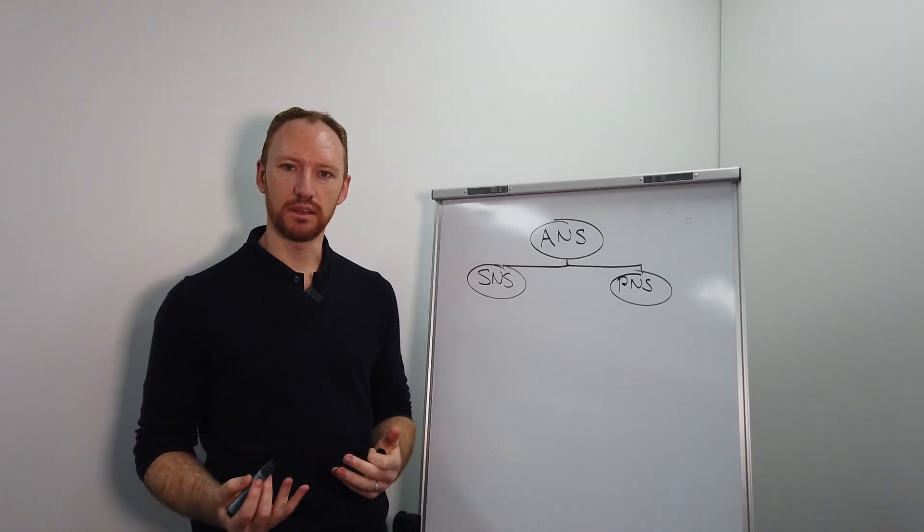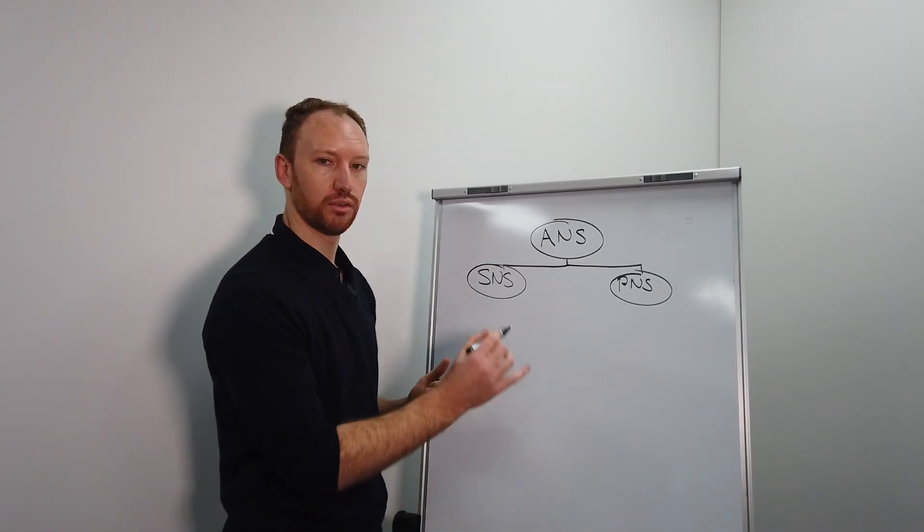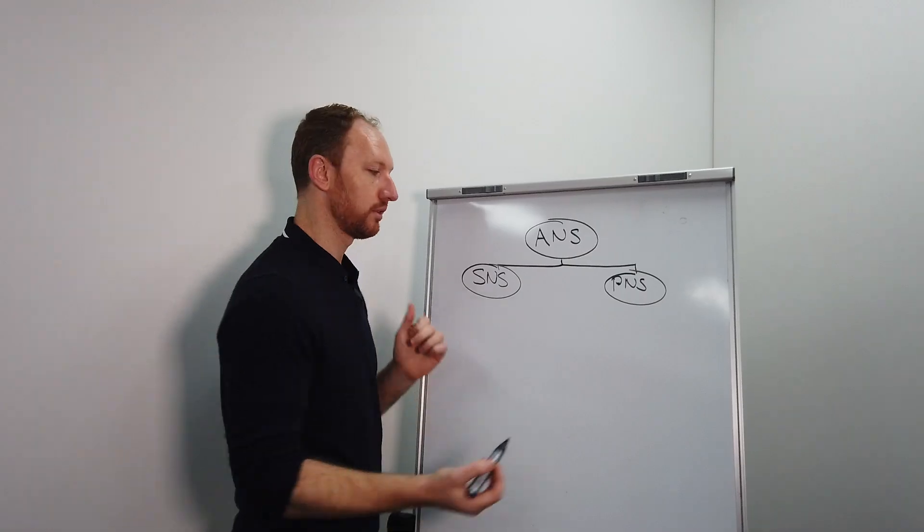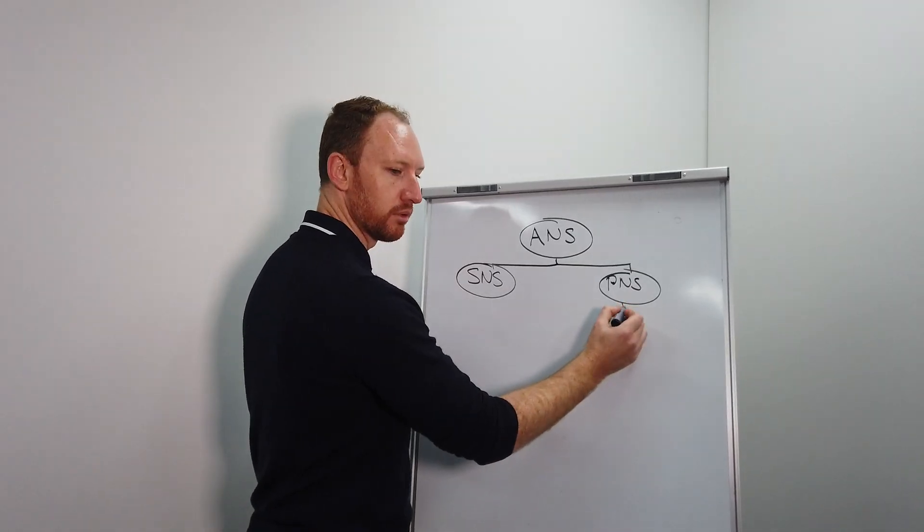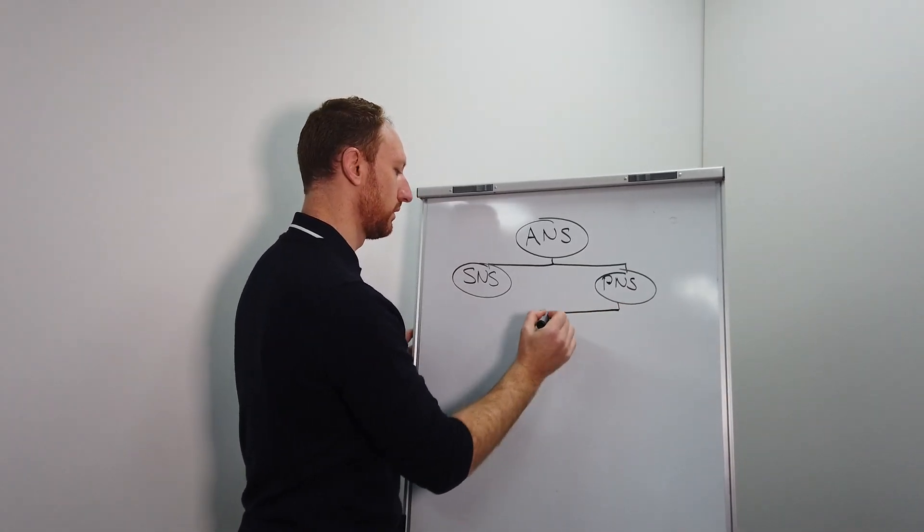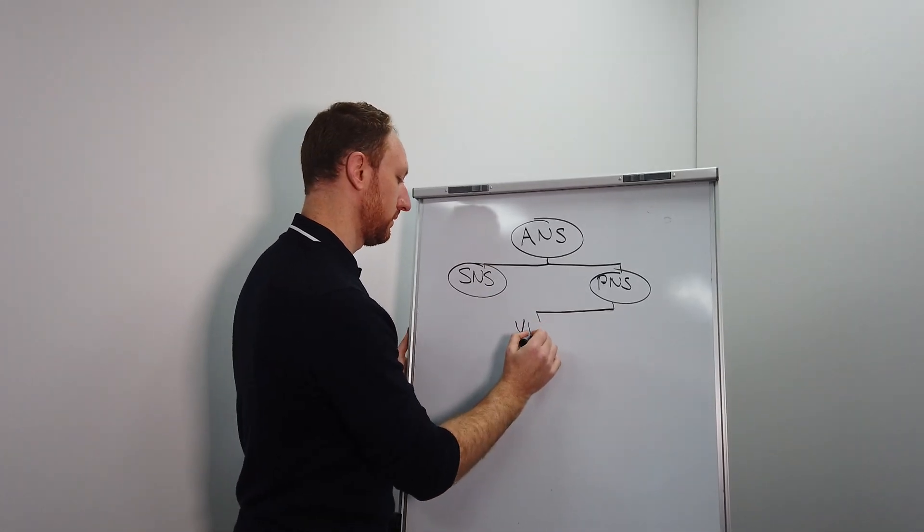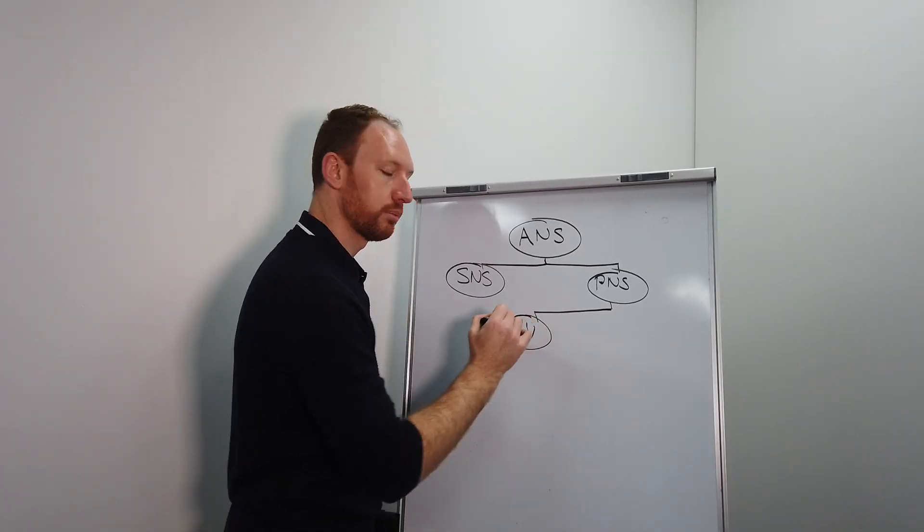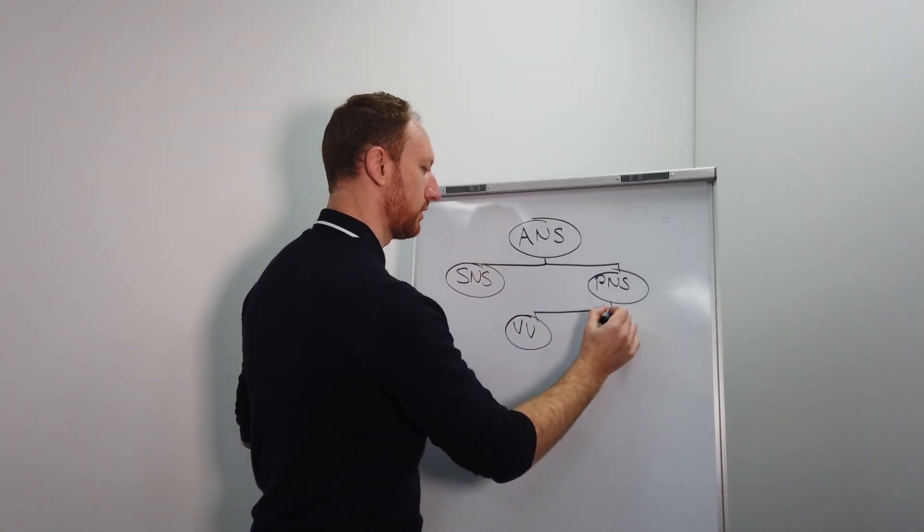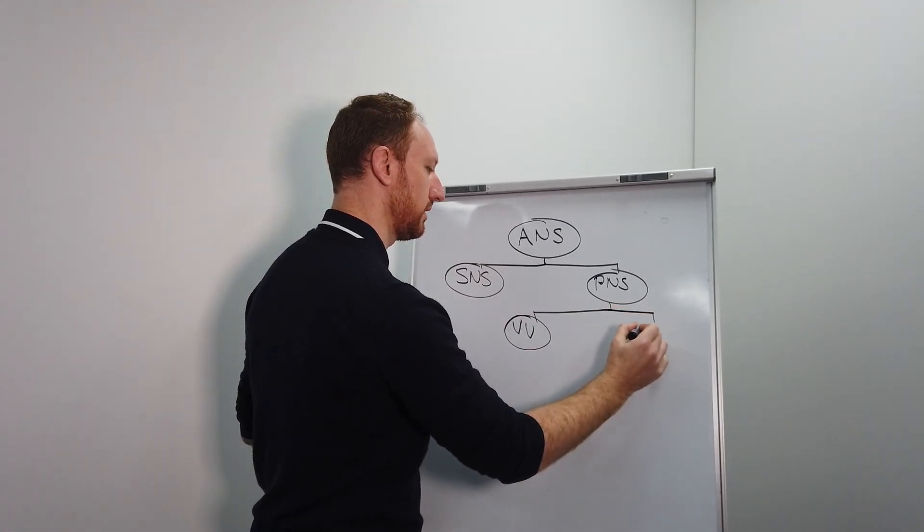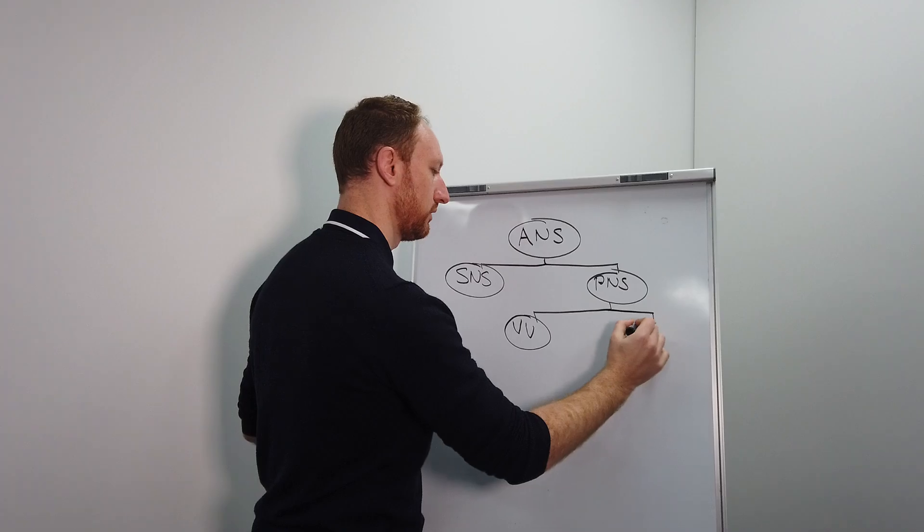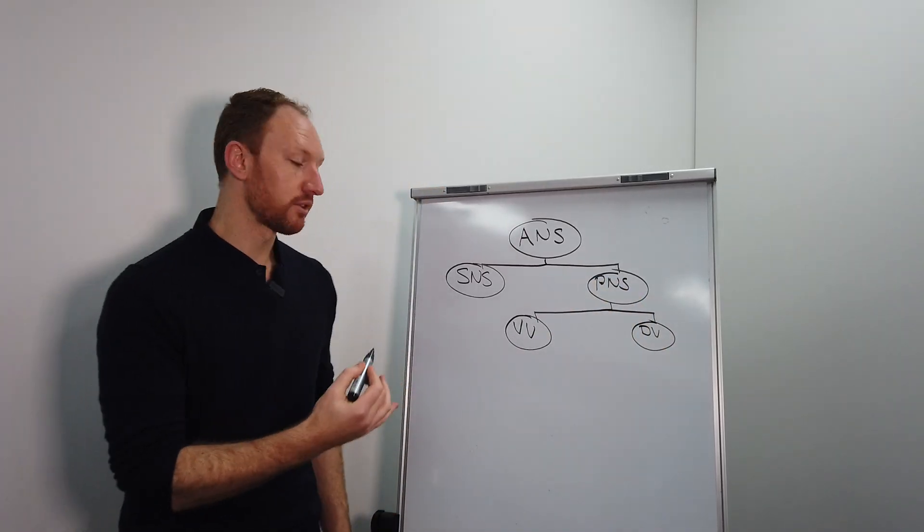But recently there's been a bit more research around this to find that there's actually two branches of the parasympathetic nervous system. So this can be broken down into the ventral vagal, so I'm just going to write VV for short, and then we've got dorsal vagal, so DV for short.